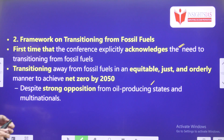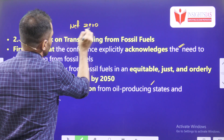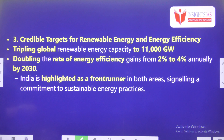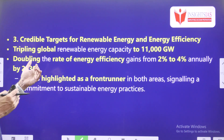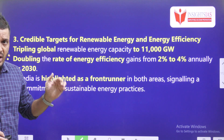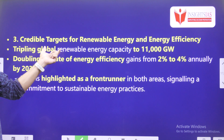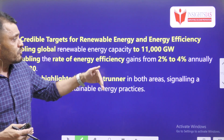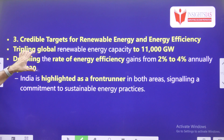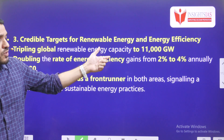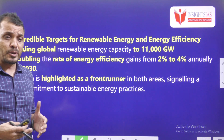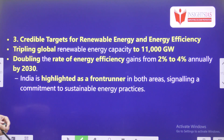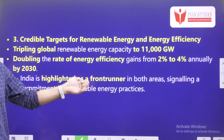India is having a different target year for net zero — comment your answer on what India's target year is. The third outcome is Credible Targets for Renewable Energy and Energy Efficiency. We have to triple global renewable energy to 11,000 gigawatts. In terms of energy efficiency, gains should improve from 2% to 4% by 2030. India highlighted its role as a front runner in both these areas.